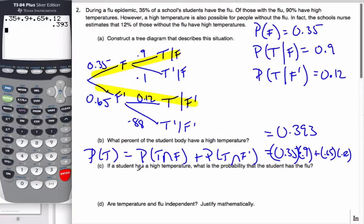Now, the next question is, if the student has a high temperature, what is the probability that the student has the flu? I'm looking for the probability of the student having the flu if they have a high temperature. So in this case, this is the reverse conditional of what is given to me. That means I'm going to be using Bayes' theorem.